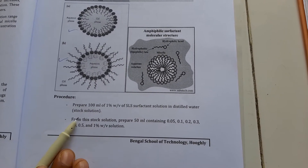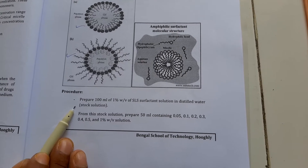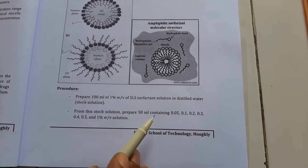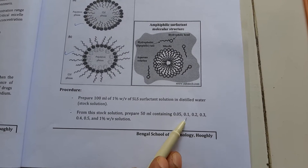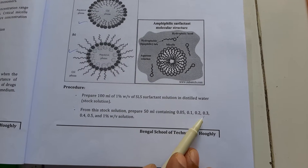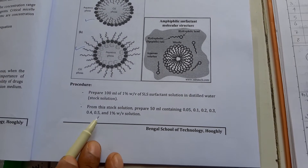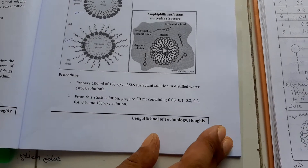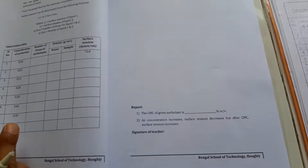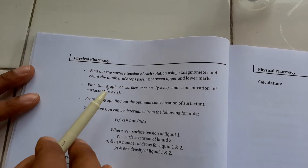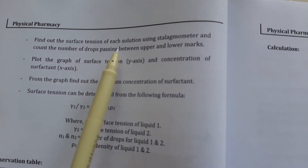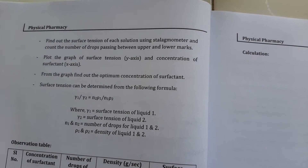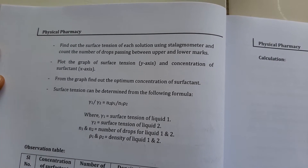This is used as a stock solution. From this stock solution, you have to prepare 50 ml solutions containing 0.05, 0.1, 0.2, 0.3, 0.4, 0.5 and 1% w/v concentrations. After preparation of those solutions, you have to find out the surface tension of each solution using the same instrument, the tensiometer, by using the drop count method.